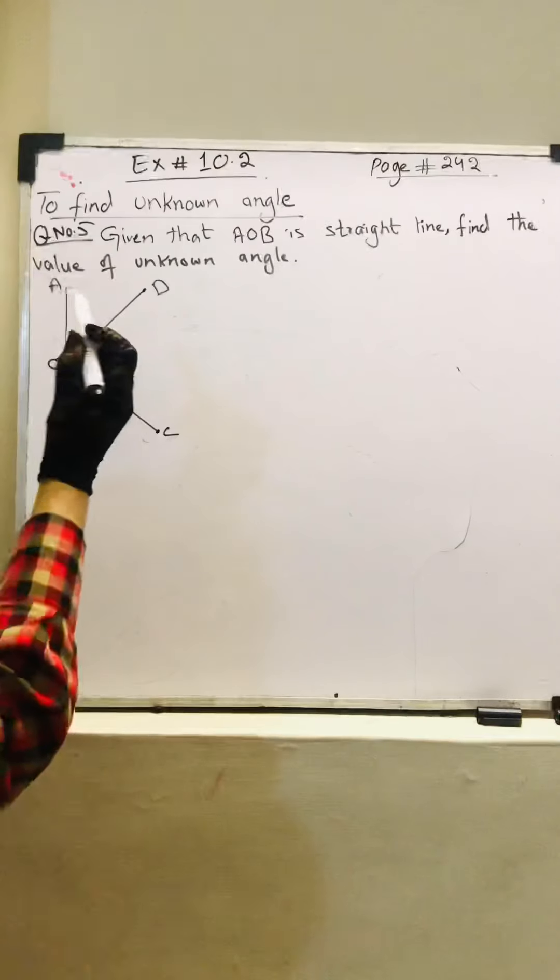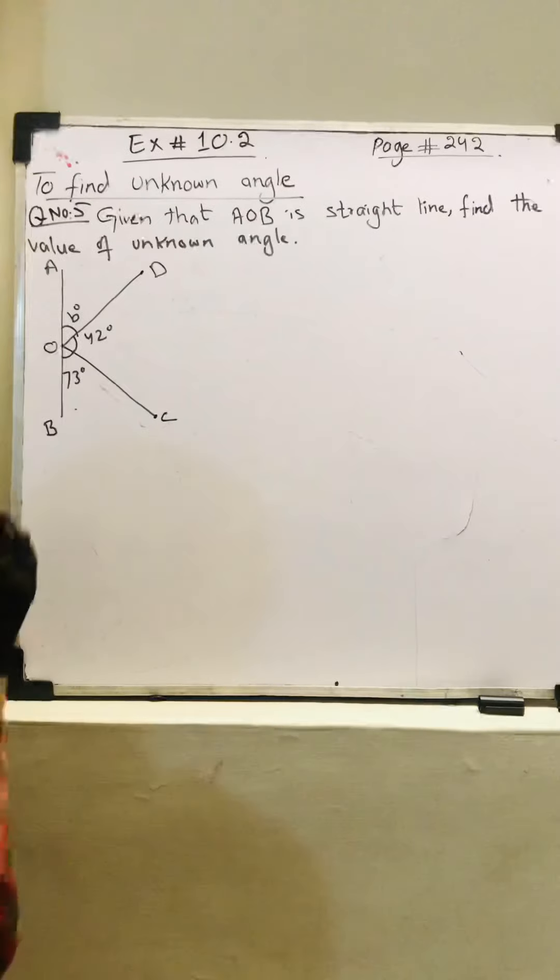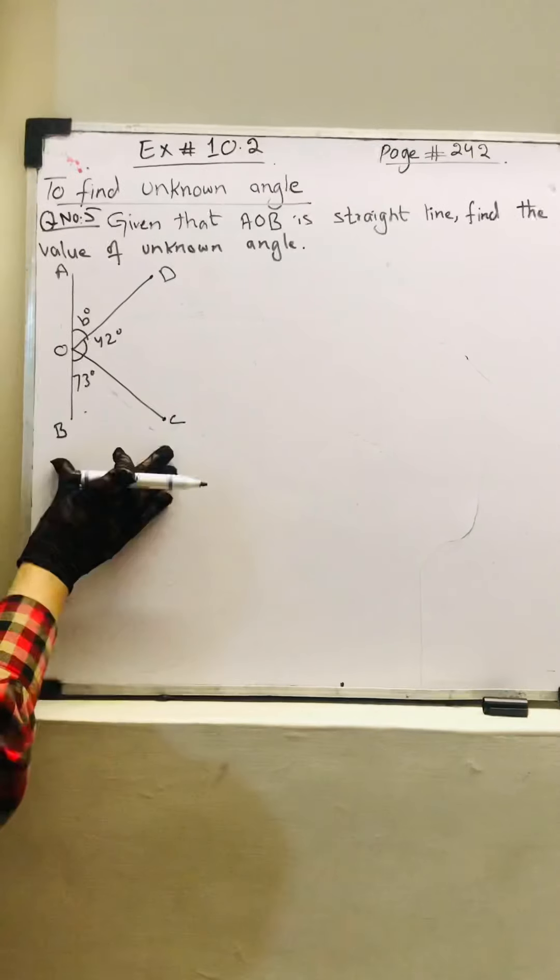Question number 5: Given that AOB is a straight line, find the value of unknown angle. This is the figure.